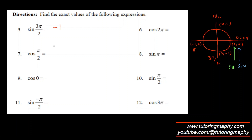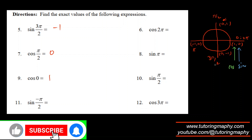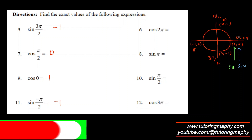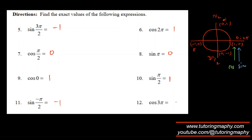cos(π/2) is the x-coordinate at π/2, which is 0. cos(0) is 1. sin(−π/2): the y-coordinate there is −1. cos(2π) equals cos(0), which is 1. sin(π) is 0. sin(π/2) is 1. cos(3π): 3π is the same as π, so the x-coordinate is −1.